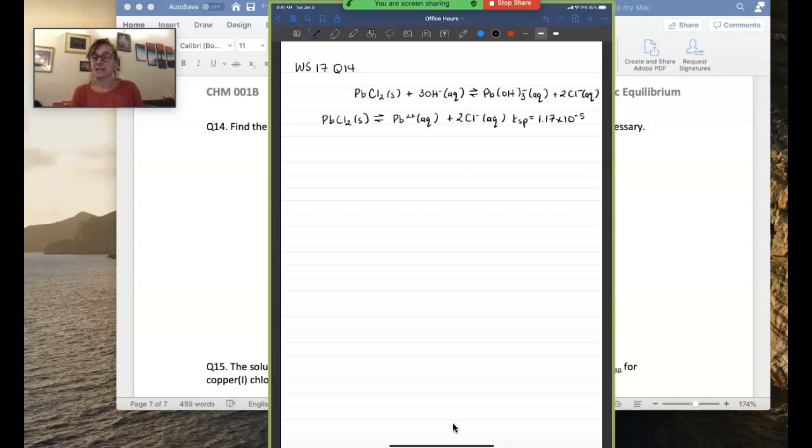So that's the KSP and then also wanted to look up the formation of the complex ion from its ions lead 2+ and hydroxide, and the KF value here is 8 times 10 to the 13th.